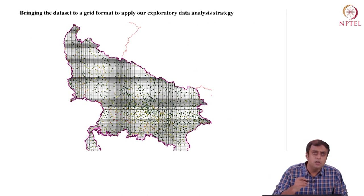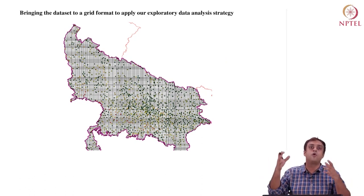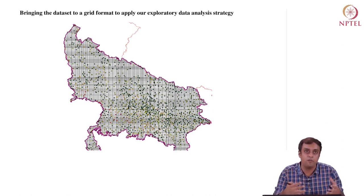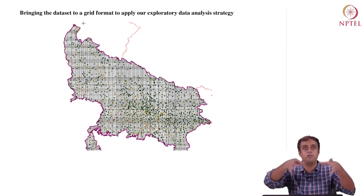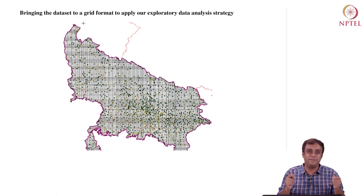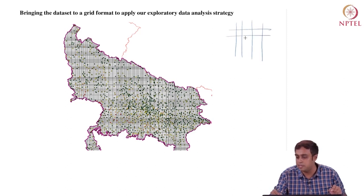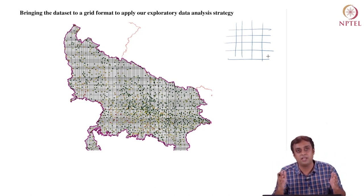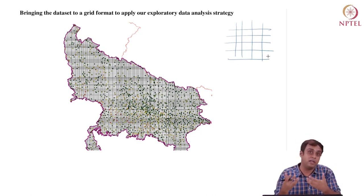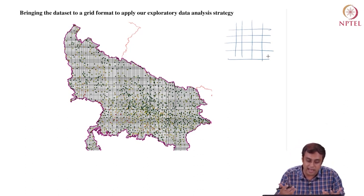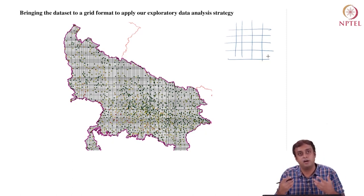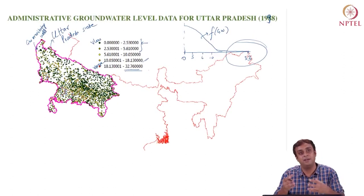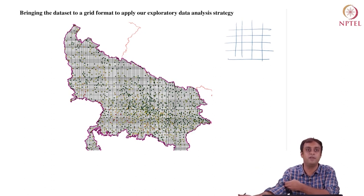In Cressy's machinery, data are organized in row-column fashion. The map of Uttar Pradesh has many wells scattered around space with an inconsistent spatial distribution. This is not textbook data collected in a nice grid of rows and columns. I have to make an attempt to organize the data in that format so I can then apply the machinery that Cressy has given me. We apply a grid-cell formulation and try to organize data in this format to move forward.